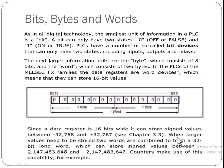When a larger value needs to be stored, two words are combined to form a 32-bit long word, which is called double word, which can store signed values between this range: 2,147,483,648 in the minus side and the same value on the plus side, 2,147,483,647. This is a huge value which can be stored in the double word. Counter makes use of this capability, for example.